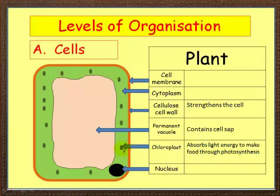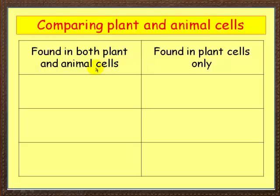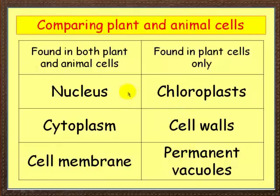A really popular exam question is to compare the two types of cell — plant and animal cells. What do we find in both plant and animal cells? We find a nucleus, cytoplasm, and cell membrane. These are all common to both. What about the things only found in plant cells? We've got the chloroplasts, the cell wall, and the permanent vacuole. You need to learn this because it often comes up in exam questions.